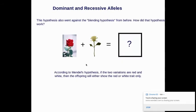This hypothesis also went against the blending hypothesis. So remember they used to think that if you crossed a red with a white flower, you would get a pink. That was the blending hypothesis. But according to Mendel's hypothesis, if the two variations are red and white, the offspring will either show red or white.